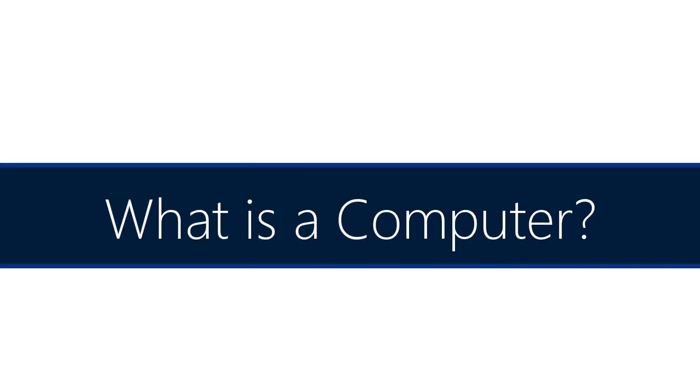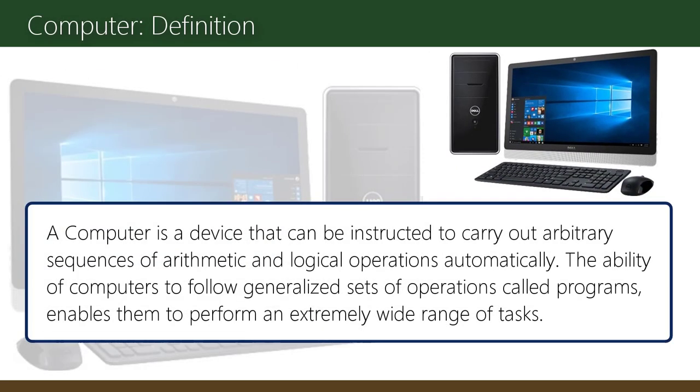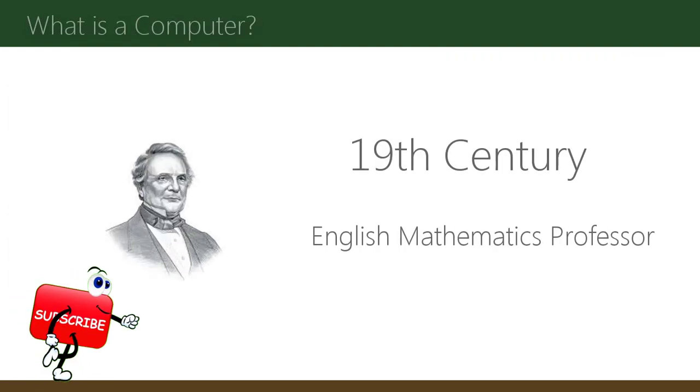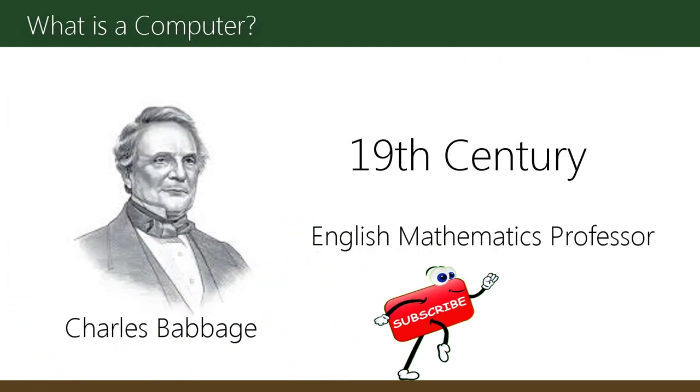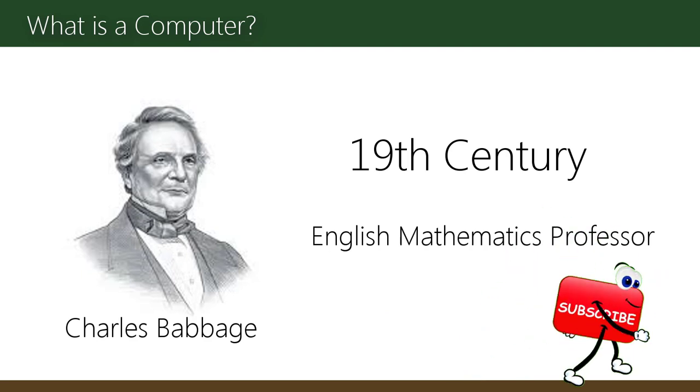What is a computer? A computer is a device that can be instructed to carry out arbitrary sequences of arithmetic or logical operations automatically. The ability of computers to follow a generalized set of operations called programs enables them to perform an extremely wide range of tasks. A computer as we know it today has its beginnings in the 19th century.